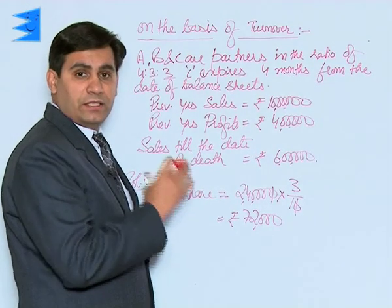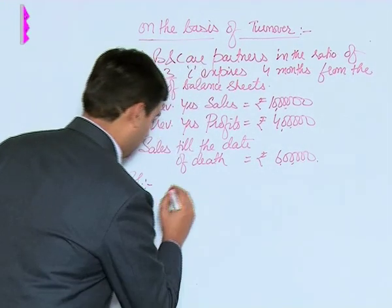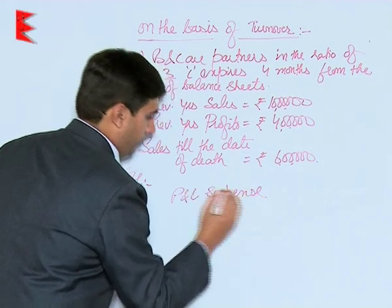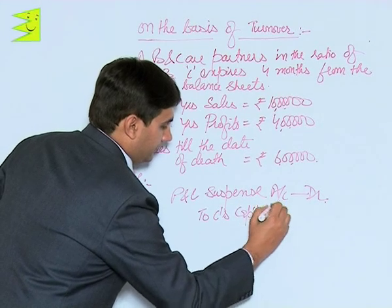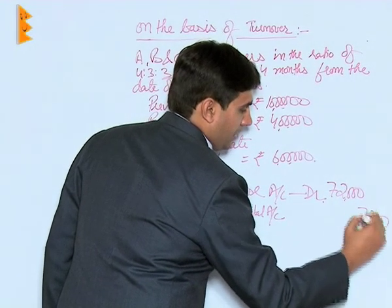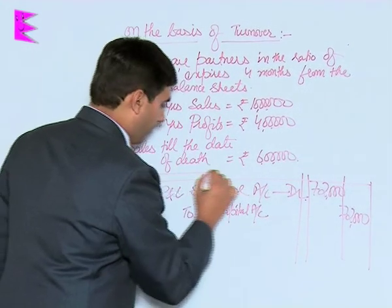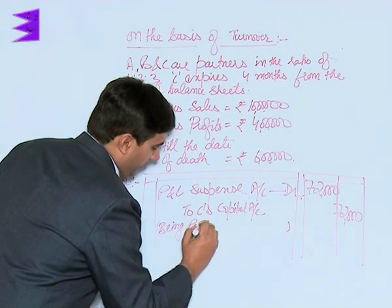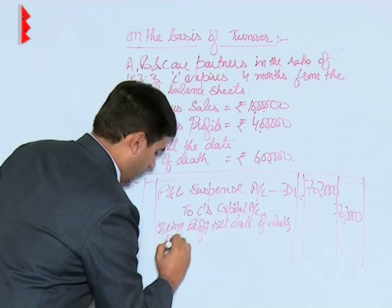This profit of the deceased partner till the date of his death will be transferred to his capital account. The journal entry for that would be: Profit and Loss Suspense Account debited to C's Capital Account — seventy-two thousand. Remember to write it in proper journal format with narration: 'Being profit till date of death transferred to capital account.'